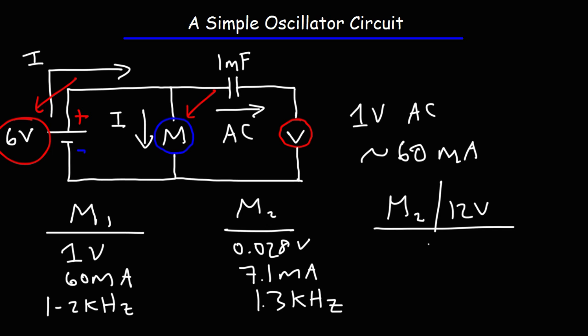Now, the voltage, it varied widely. We didn't really get a good reading for that. The current increased from 7.1 milliamps to about 13 to 14 milliamps. And the frequency was around 3.5 to 4 kilohertz.